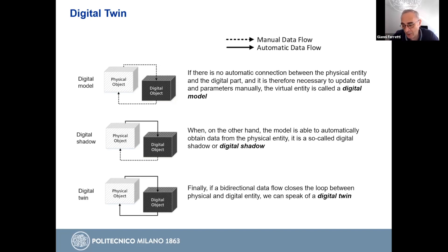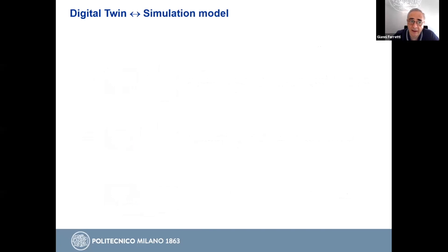And finally, we can define a digital twin as the connection between a digital model and the real plant. But this connection must be bidirectional. So data are used to update the model and accordingly, the model is used to take decision on the working of the plant. So actually, we are only talking about the process of defining the digital model required by a digital twin.